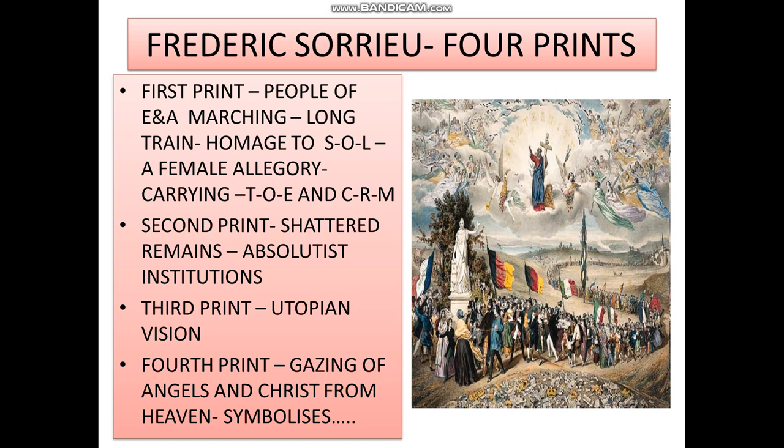The third print is a utopian vision where the people of the world are grouped as distinct nations, identified through their flags and national costumes. You can see people wearing different costumes and having different flags, indicating democratic nations being formed. Initially the world was under the dominion of monarchy, but now people have decided to liberate themselves, taking their flags and moving towards the statue of liberty.